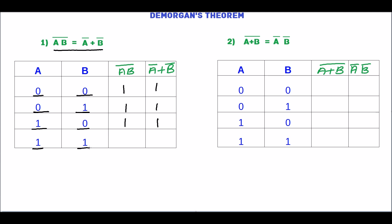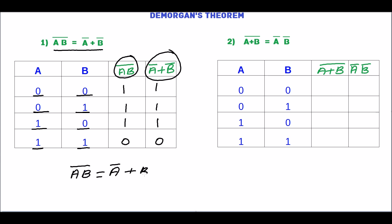For A=1, B=1: AB is 1, and 1 complement is 0. For A=1, B=1: A complement is 0 and B complement is 0, so A complement plus B complement is 0. In the truth table, both AB complement and A complement plus B complement have the same values, so we can prove AB complement equals A complement plus B complement.